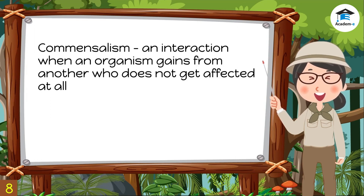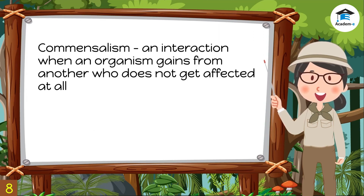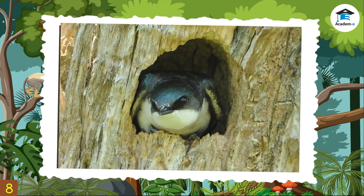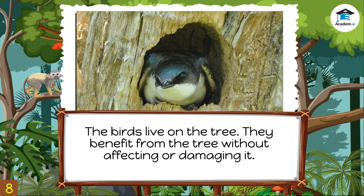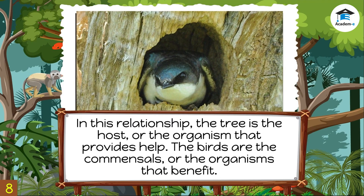When an organism gains from another who does not get affected at all, the interaction is called commensalism. For example, birds live on a tree and benefit from it without affecting or damaging it. In this relationship, the tree is the host, or the organism that provides help, and the birds are the commensals, or the organisms that benefit.